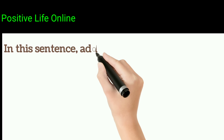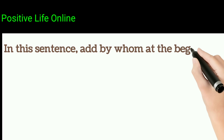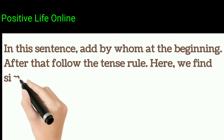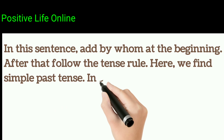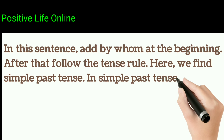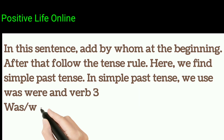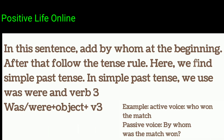To change into passive, put 'by whom' at the beginning. After that, follow the tense rule. Here we find simple past tense. In simple past tense, we use was/were plus verb 3. Structure: was/were + object + V3.